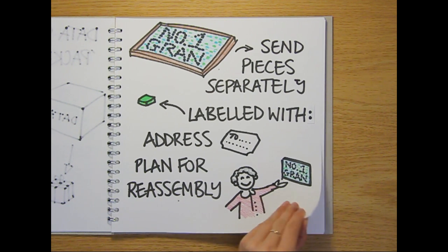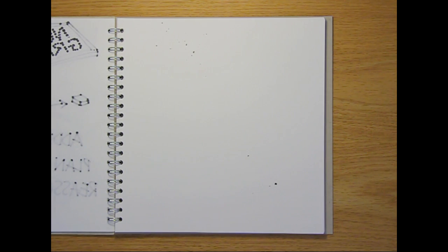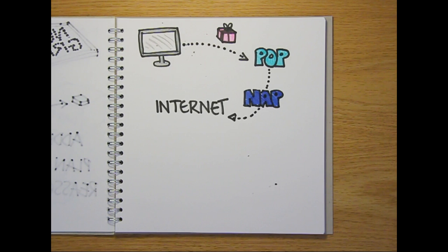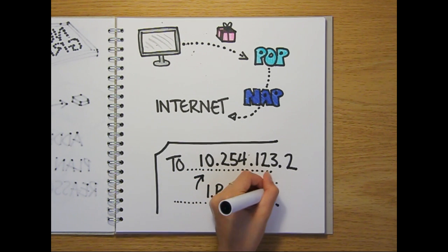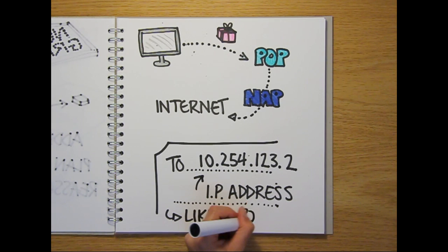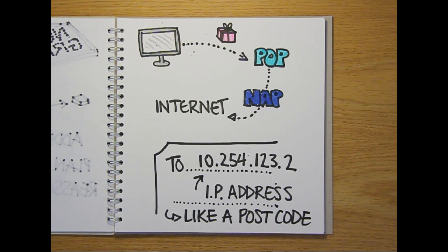Network packets are treated in exactly the same way as your grandma's mosaic, but rather than going through the post, they're sent from your computer to your ISP's POP and then onto the internet. The address they have written on them is called the IP address, which is a unique number, a bit like a postcode, that identifies the computer or device the packets are being sent to.